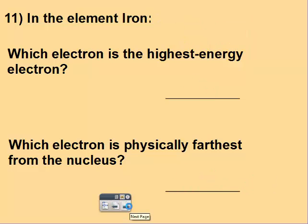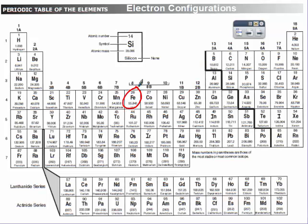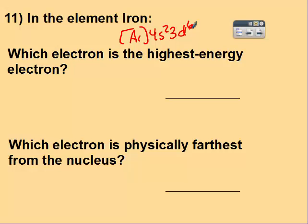Write the shorthand configuration for iron. Restart when you have it. So here's iron, we should use argon, and then 4s2, 3d6. So the highest energy electron is the last one to fill, so in the 3d. And the farthest from the nucleus, you can either say 4s or 4th energy level. Either one.